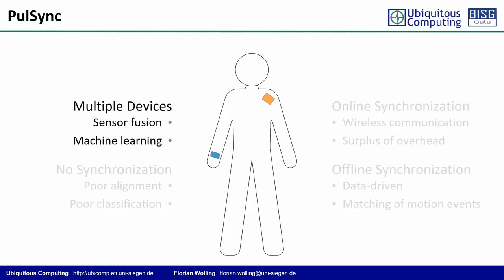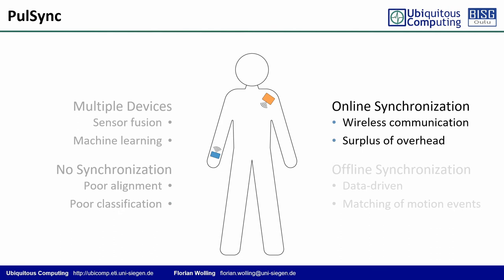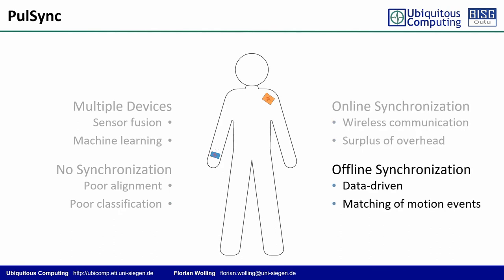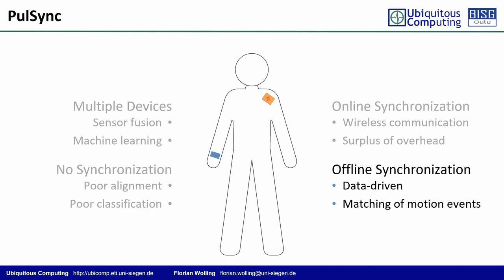Various sensing tasks can benefit from the use of multiple wearable devices. Especially sensor fusion and machine learning approaches are suffering from the poor alignment of coincident events, which results in poor classification. Neither the inefficient wireless online synchronization nor the data-driven offline synchronization based on motion events are optimal in this context.